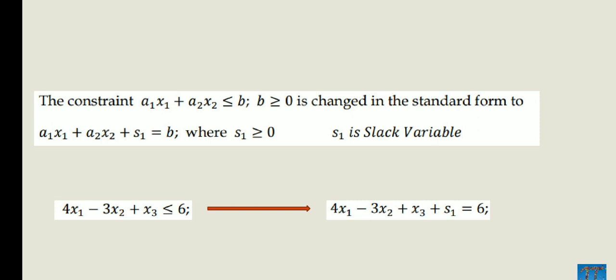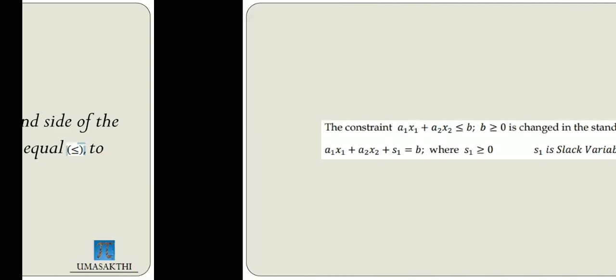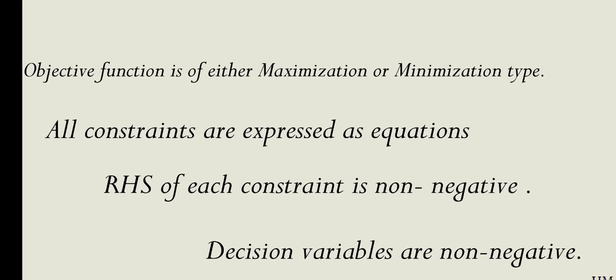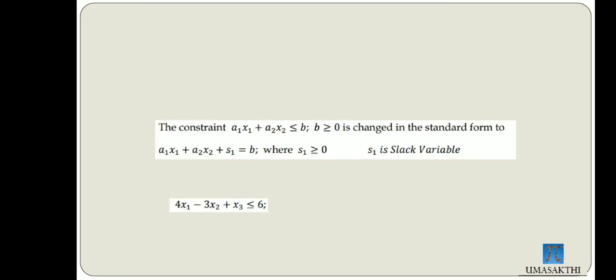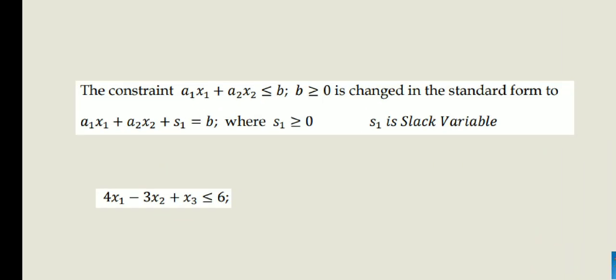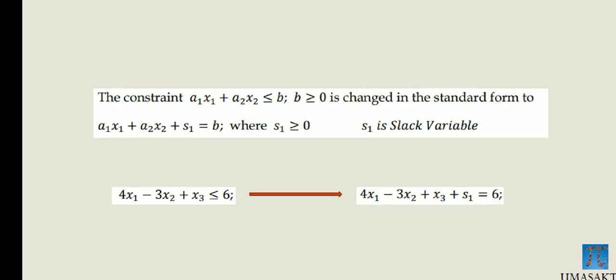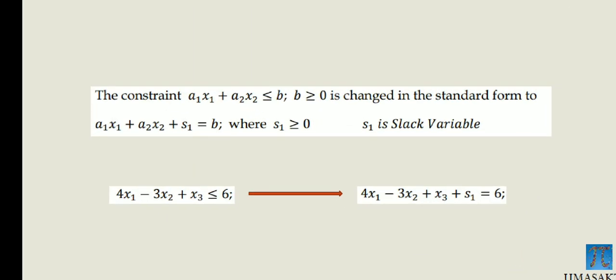When we have a less-than-or-equal constraint, we add a slack variable. The right-hand side condition must be non-negative. If it is non-negative, all constraints can be expressed as equations with non-negative variables. The RHS must be a non-negative number.